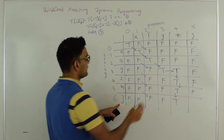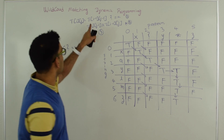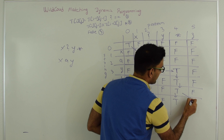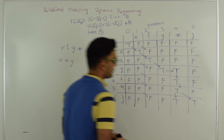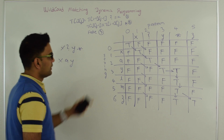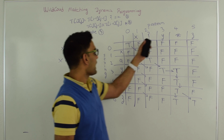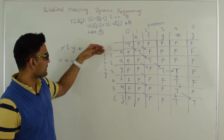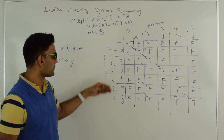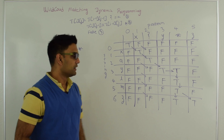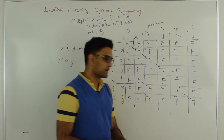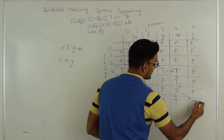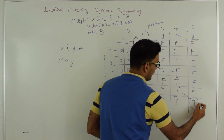Finally, Z and Z are the same — we use condition 1 and take the diagonal value T[5][4] which is true, so T[6][5] is true. So pattern X?Y*Z does match with the string XAYLMZ. The final answer is at the bottom-right corner of the matrix.